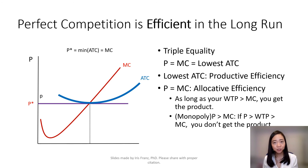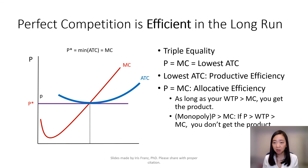So in conclusion, we know that perfect competition has both productive efficiency and allocative efficiency.